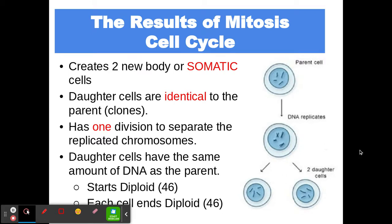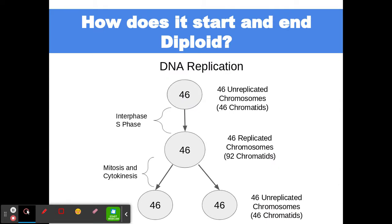This is how we repair and replace, and how single-celled organisms reproduce — making identical cells that are just a bit smaller because we split one in half. We start with 46 chromosomes, replicate them, then split them back, ending with 46 chromosomes. The chromosome number stays the same throughout; we remain diploid.